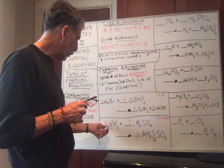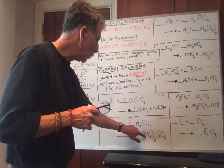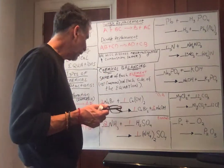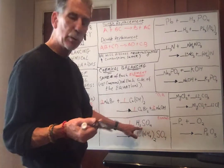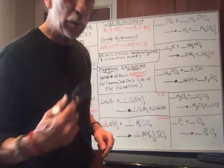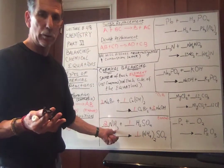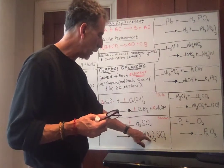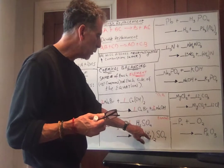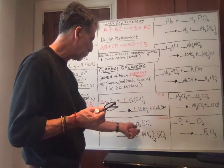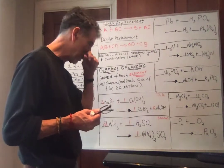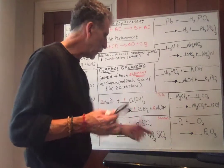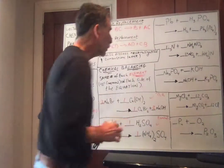Let's balance: I put a two in front of NH3, giving two nitrogens. Two times three is six hydrogens from NH3, plus two hydrogens from H2SO4, totaling eight hydrogens. On the right, two ammonium ions — two times four is eight hydrogens. Good. One sulfur on each side. Four oxygens from SO4 on each side. This is balanced: balance, balance, balance — a combination reaction.